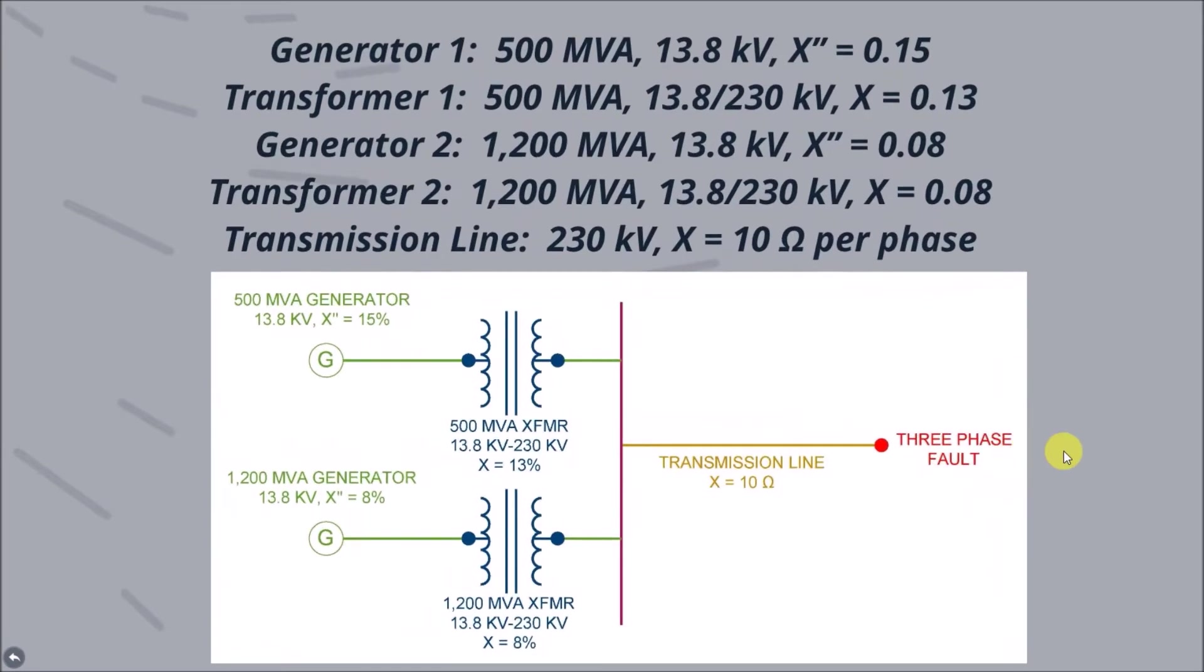The properties of the generators and transformers are shown on this slide. The voltages, MVAs, and sub-transient reactances are provided for the generator. The voltages, MVAs, and percent impedances are provided for the transformers. Finally, the rated voltage and impedance per phase of the transmission line is provided.